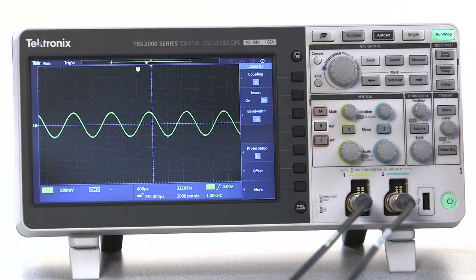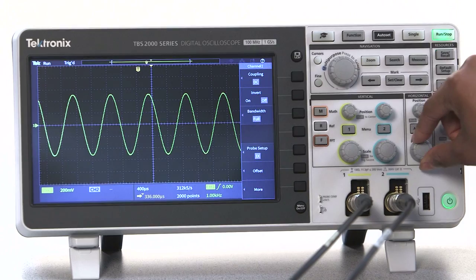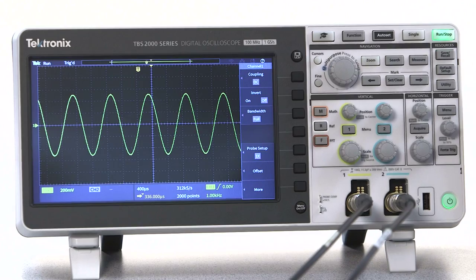Kind of how the vertical scale could make it look like we made the waveform taller or shorter, the horizontal scale makes it look as if we're stretching the signal wider or more narrow. When in reality, this changes the time in each horizontal division of the display.